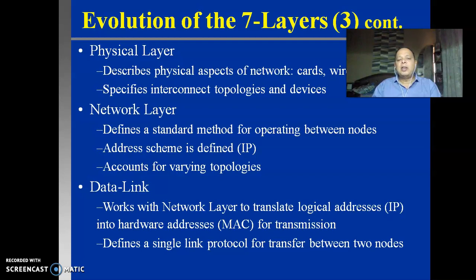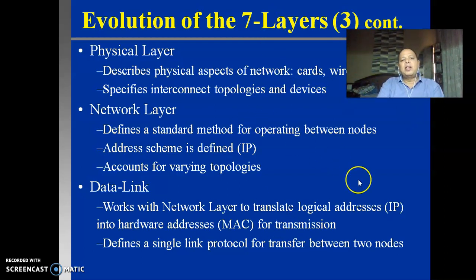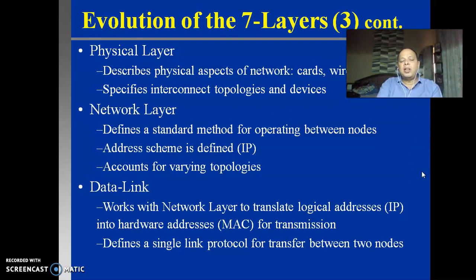The data link layer defines a single link protocol for transfer between two nodes. As the name itself suggests - data link - the purpose is linking the two layers for data transmission and reception. In this way, the entire protocol for translating the logical address into hardware addresses is intended for transfer between two nodes in a network. So that is the function of these three layers. In this four layer model: the physical layer takes care of the physical aspects of networking like cards and wires, specifying interconnection topologies and devices; the network layer takes care of standardization for identification of nodes by means of IP address; and the data link layer takes care of translation of logical addresses into hardware MAC addresses.